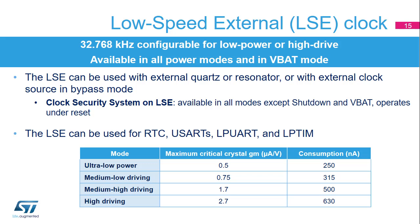The 32.768 kHz low-speed external oscillator can be used with an external quartz or resonator or with an external clock source in bypass mode. It provides a low-power but highly accurate clock source to the real-time clock peripheral, or RTC, for clock and calendar or other timing functions. The oscillator driving capability is programmable with four modes available, from ultra-low power mode with a consumption of only 250 nA to high-driving mode. A clock security system monitors for failure of the LSE oscillator; in case of failure, the application can switch the RTC clock to the LSI. The CSS is functional in all modes except shutdown and VBAT, and is also functional under reset. The LSE can be used to clock the RTC, the USARTs, low-power UART peripherals, and the low-power timer.